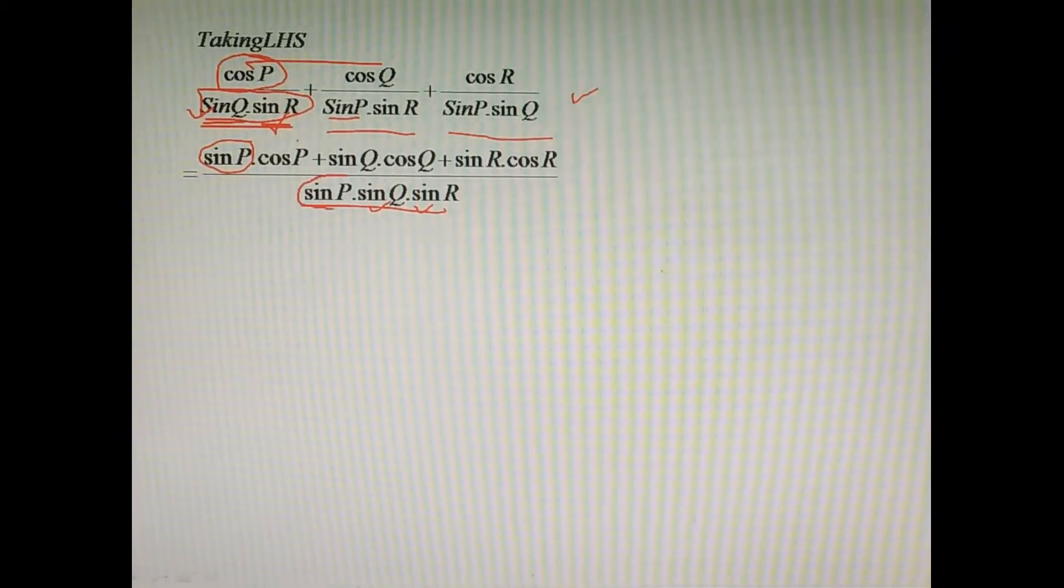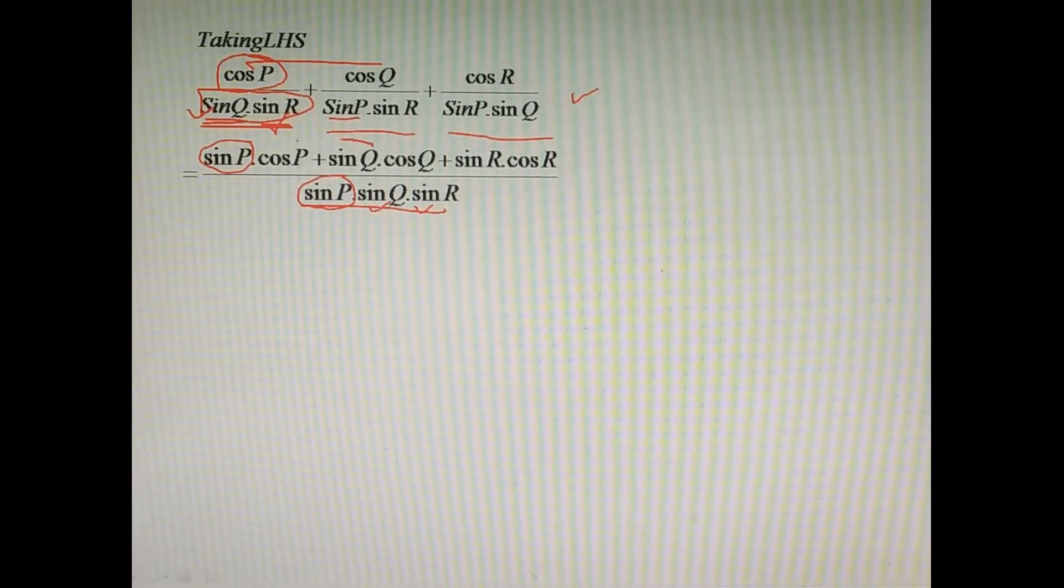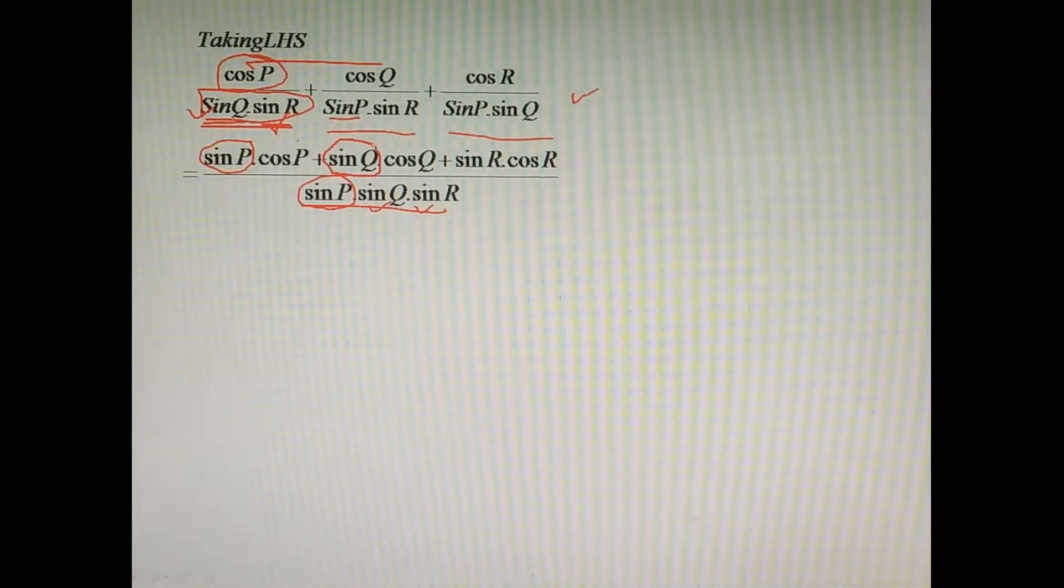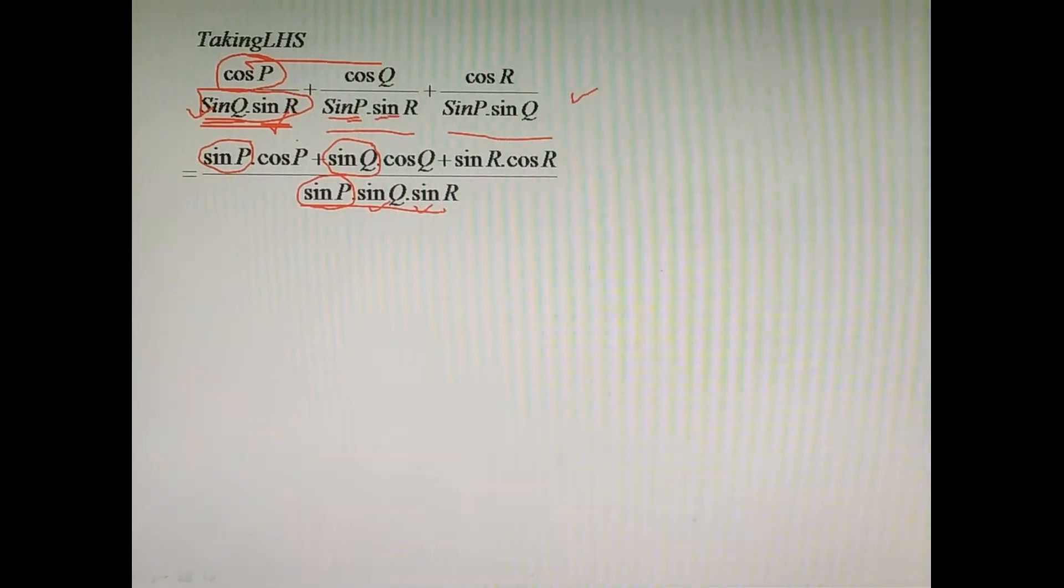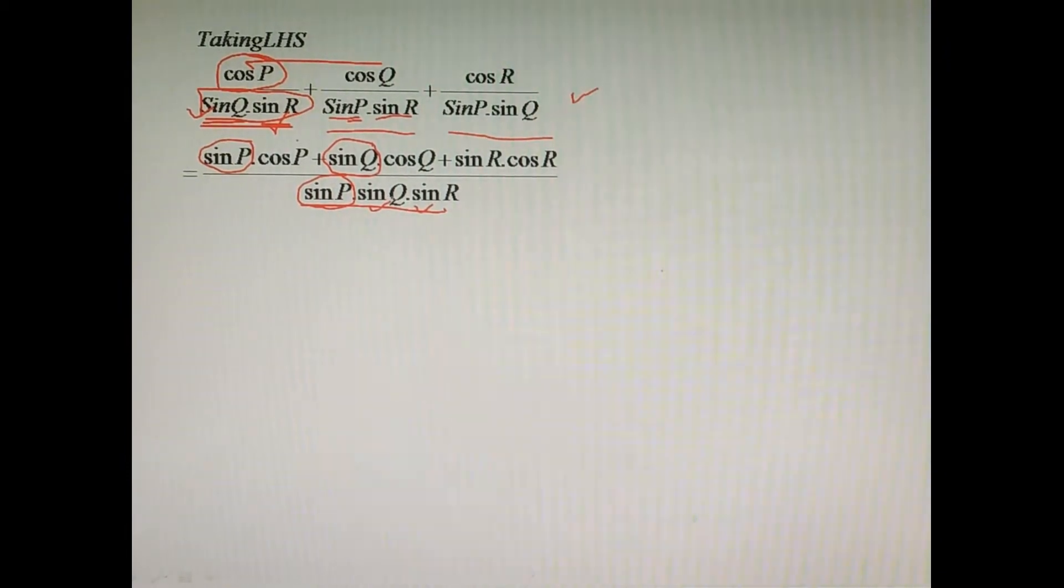Similarly, we will multiply with sine Q to the second factor, because sine P and sine R are already there in the denominator of the second factor, so there remains sine Q to be multiplied. In the same way, the third factor is multiplied by sine R.